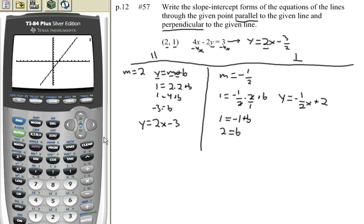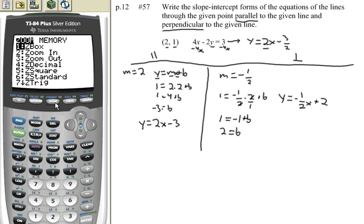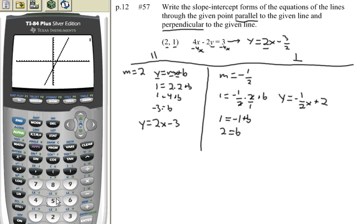I'll press my graph button. And here comes the first line. Here comes the second line. You might ask yourself, well, they don't look perpendicular. Well, that's just because our screen is stretched. If I want to fix that, I can press my zoom key. The fifth choice is z square. And if I do that, now they do look perpendicular. They both pass through the point 2 comma 1. One is parallel to that original line, and one is perpendicular to it.